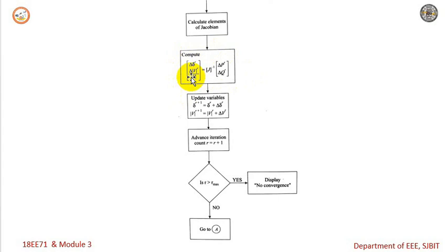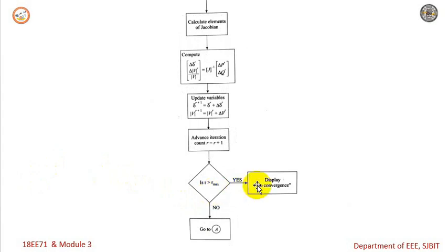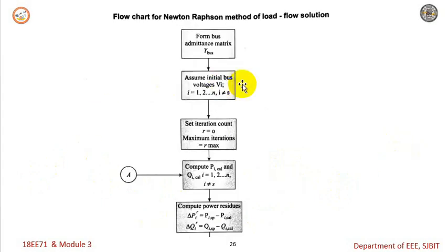Once we compute delta-delta and delta V, we update these variables for the (r+1)-th iteration: delta(r+1) equals delta(r) plus delta-delta, and V(r+1) equals V(r) plus delta V. We then advance the iteration count r to r plus 1 and check whether r is greater than r_max. If no, we go back to computing P_i and Q_i calculated and follow the same procedure. If yes, we display 'no convergence.' This completes the flowchart of the Newton-Raphson method in polar coordinates.